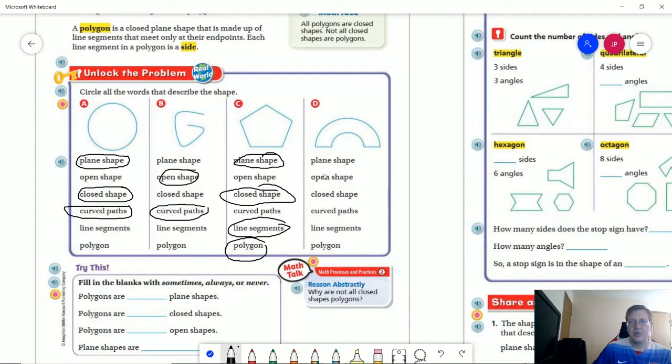And then letter d, we do have curved paths, sorry, plane shape, closed shape, we have curved paths, we do have line segments but because we don't have a shape that is made up of only line segments we do not have a polygon for that.